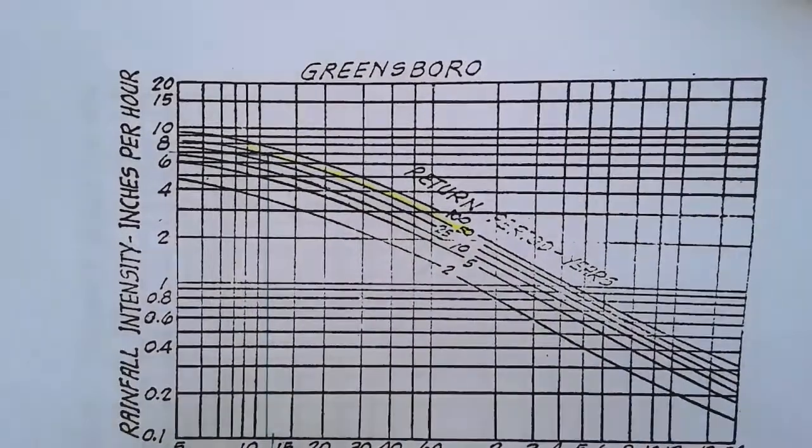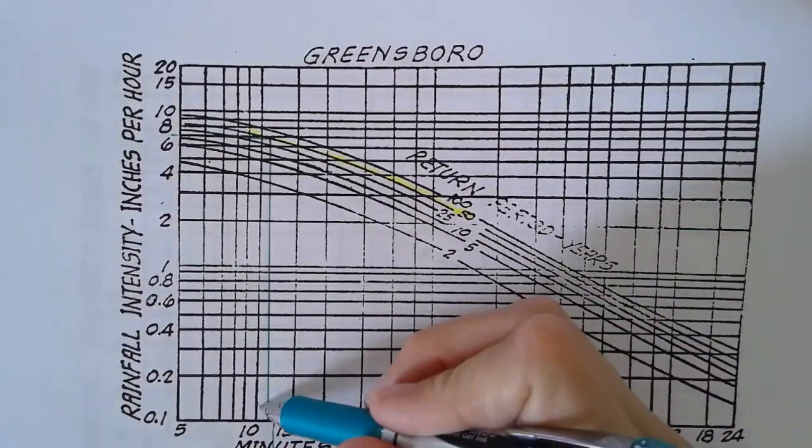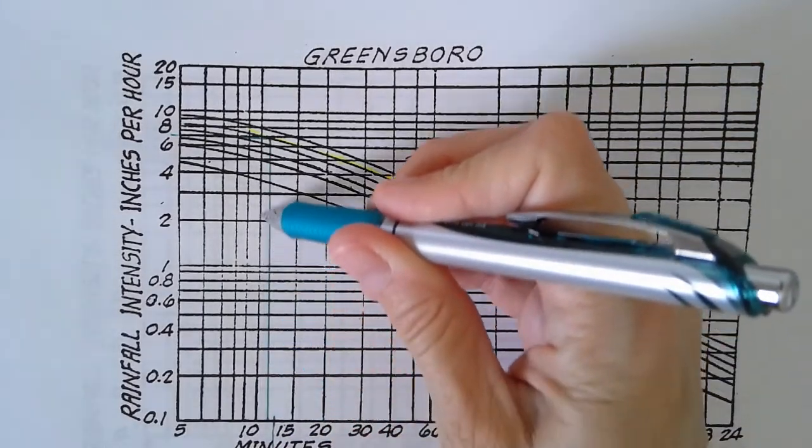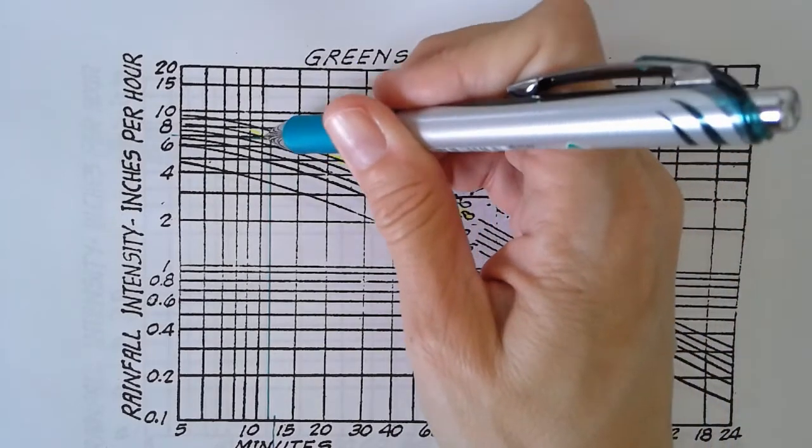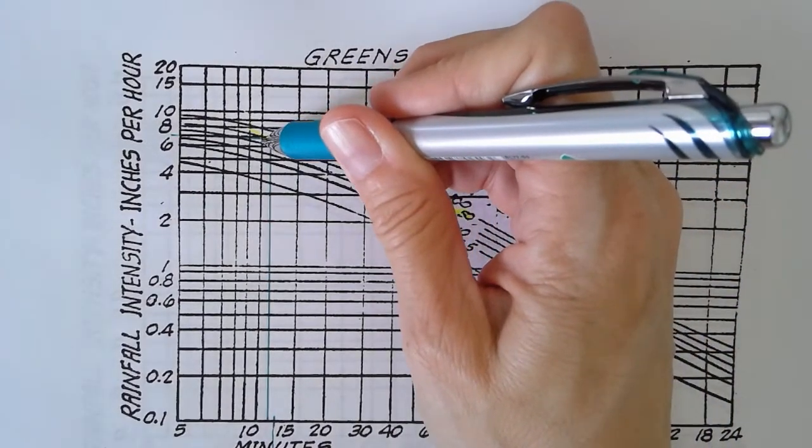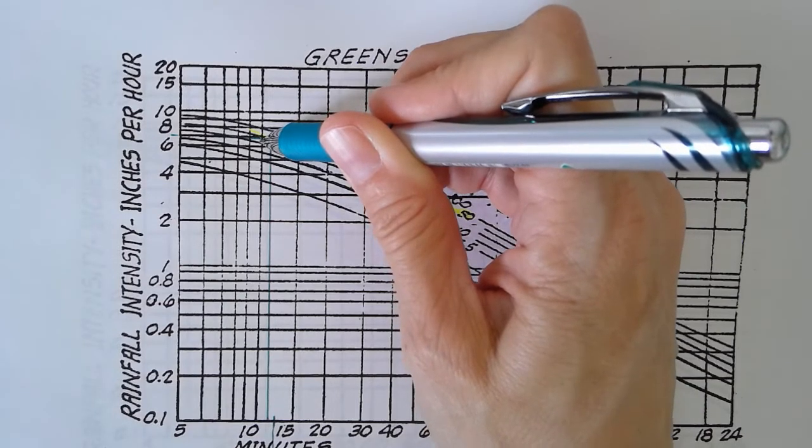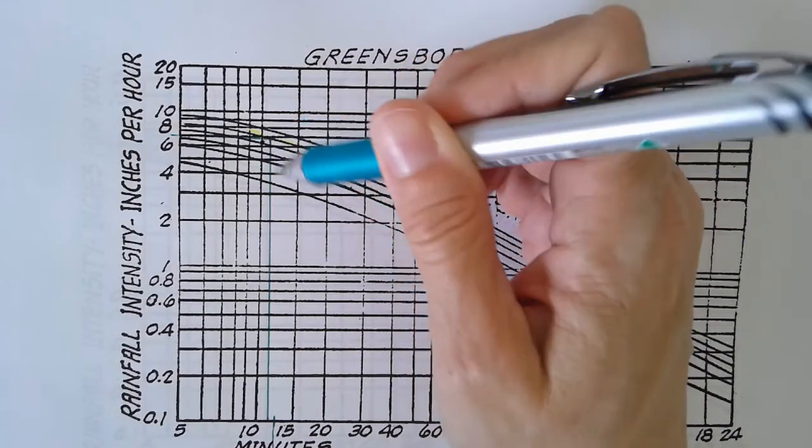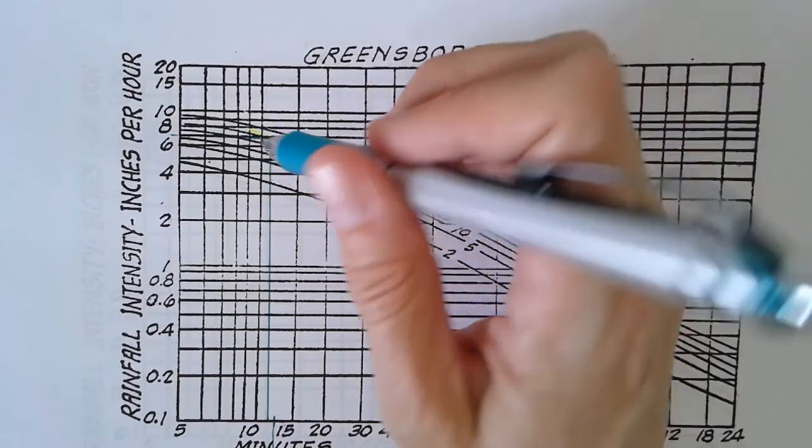So for our 10-minute, coming up from the bottom here from our 10-minute line, we're going to come and follow that up until we intersect the 25-year storm. So that's that third line coming down, and if we put like a little dot in there, we could see that that's just a bit more than that 6, a little bit greater than that 6. So I'm going to go ahead and call that a 6.3.